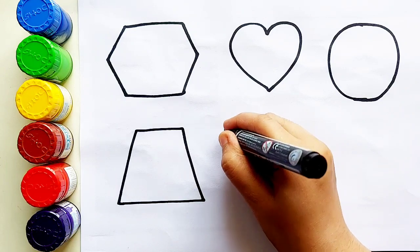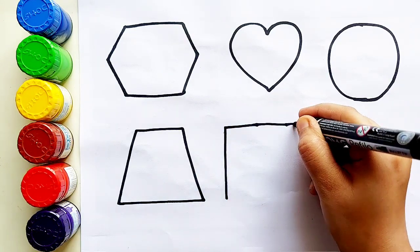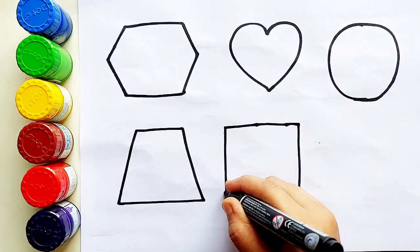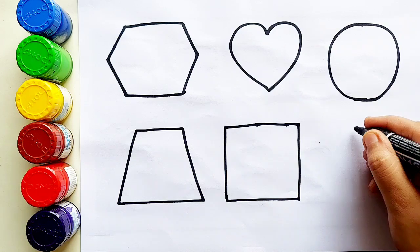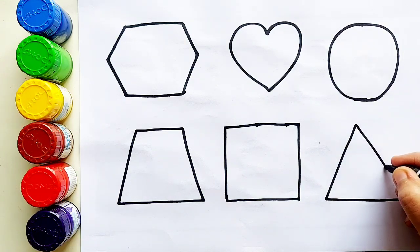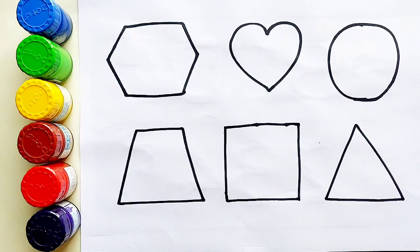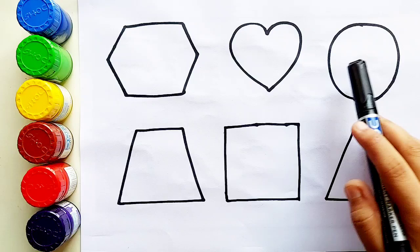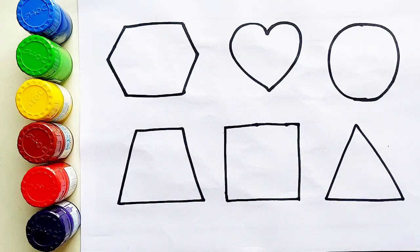Trapezoid. Square. Triangle. Review: Hexagon, heart, circle, trapezoid, square, triangle.